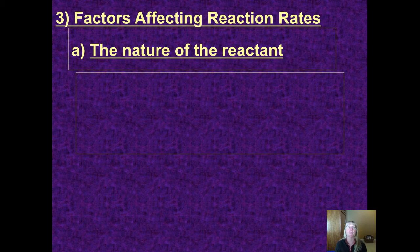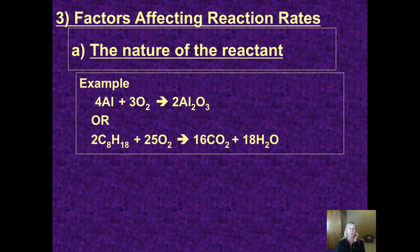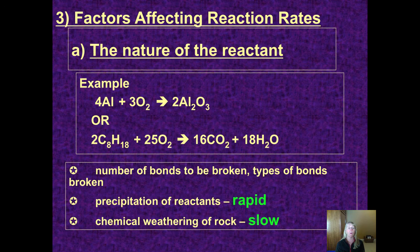There are a couple of factors that influence reaction rate. One of those is what is the substance that's actually reacting. Let's compare these two equations here. I hope you can see the very simple aluminum and oxygen makes aluminum oxide necessitates only having to break a few bonds and reforming a few bonds, whereas burning this octane and oxygen to make CO2 and water has lots of bonds to break.